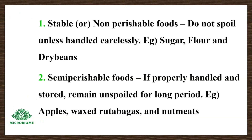First, about non-perishable foods, otherwise called stable foods, that do not spoil unless handled carelessly. Examples include sugar, flour, and dried beans. Next, about semi-perishable food — examples include apples, waxed vegetables, and nut meats. If properly handled and stored, they remain unspoiled for a long time.